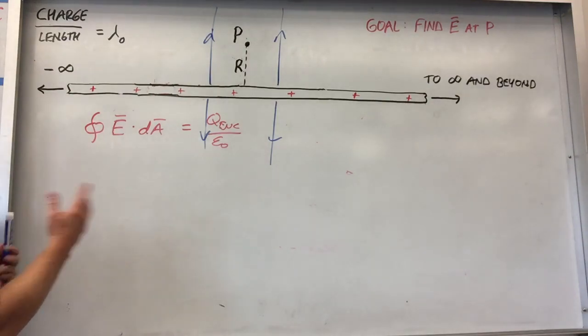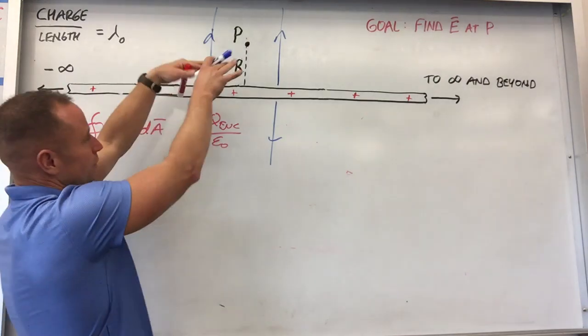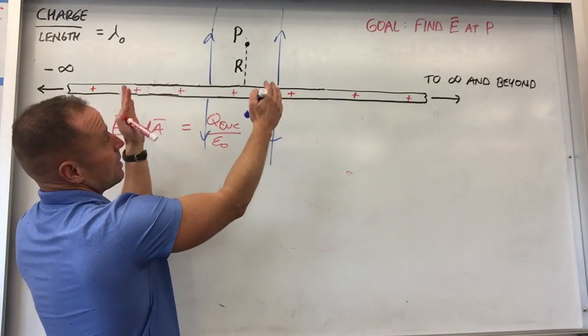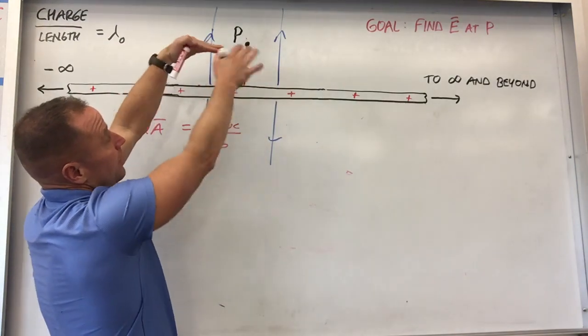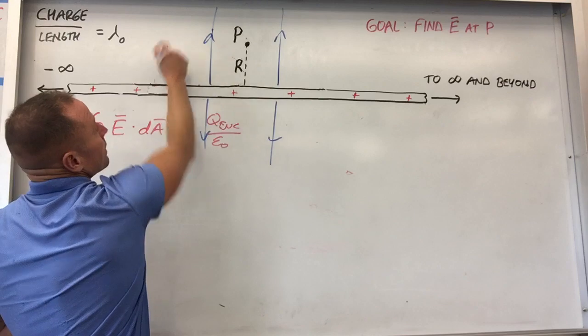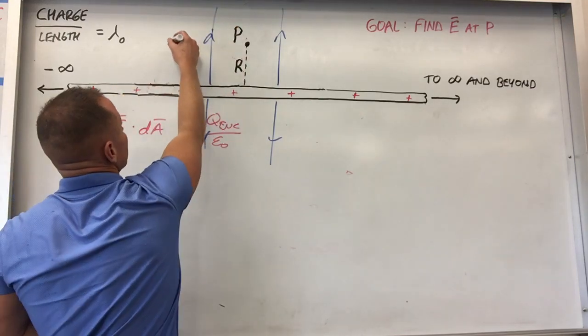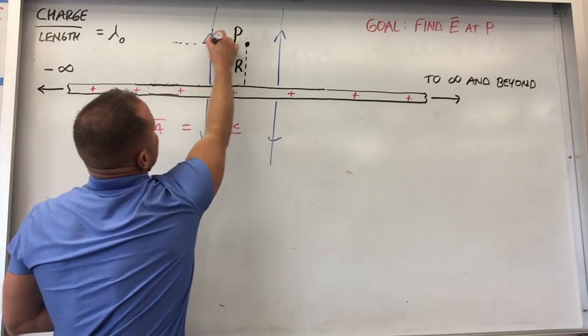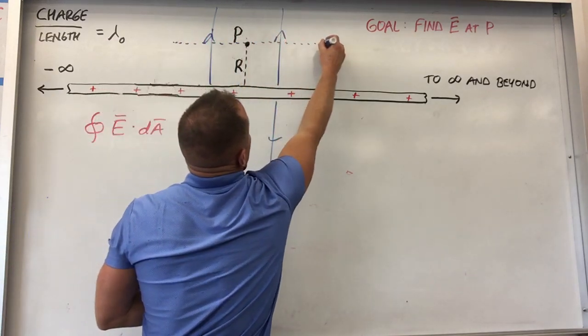So what we need to do is find a surface for which it's easy to calculate flux. Well, the hallmarks of a surface for which it's easy to calculate flux is the surface would either be parallel or perpendicular to the field. And so what we'll do is we'll pick, in this geometry, we'll pick a cylinder. So our Gaussian surface that we're going to use is going to be a cylinder that goes out to the point that we care about.